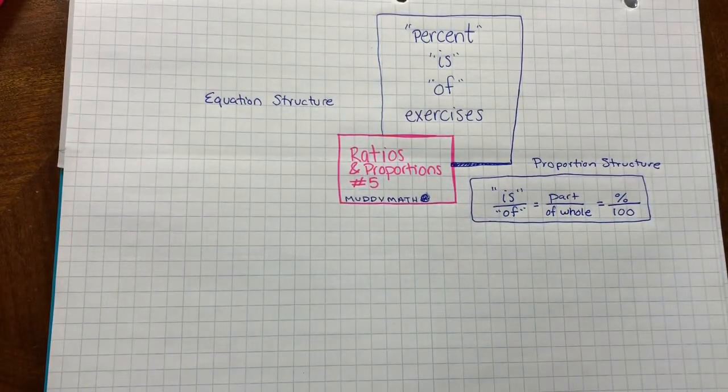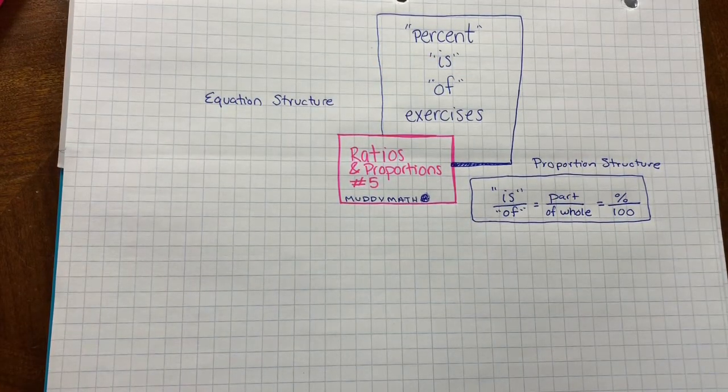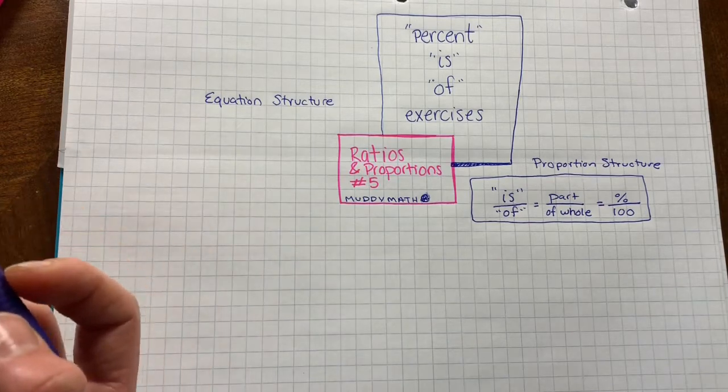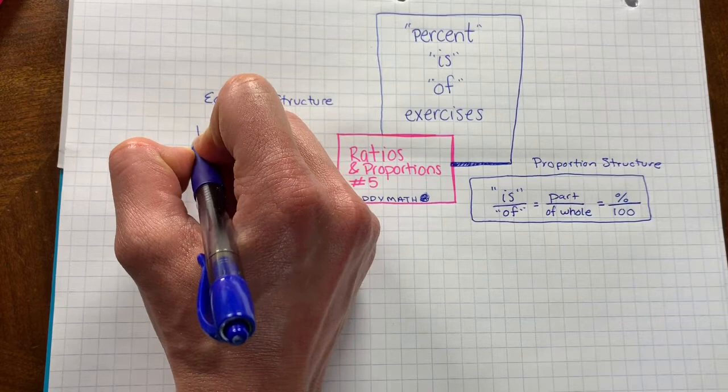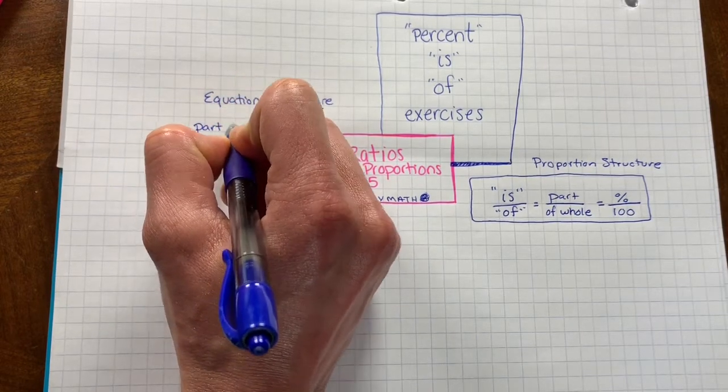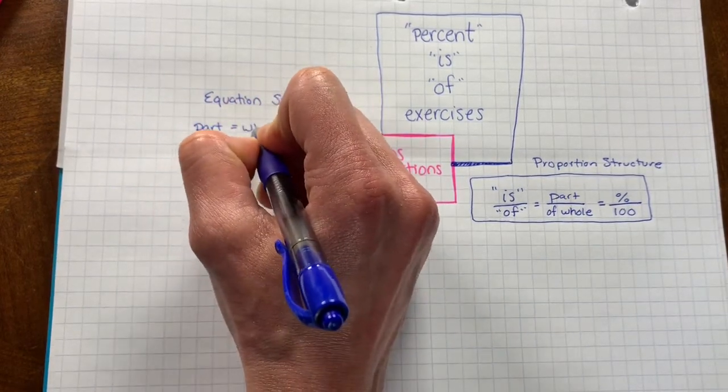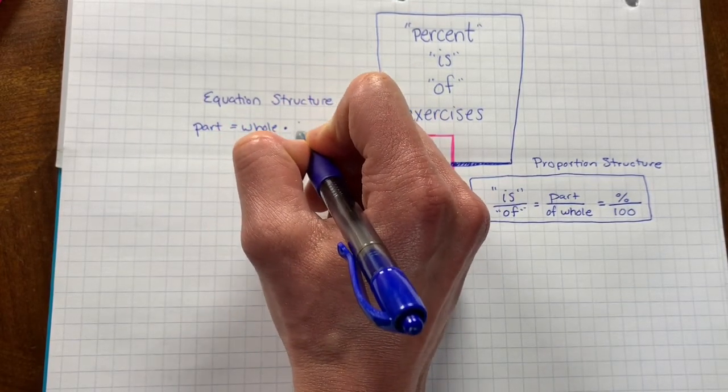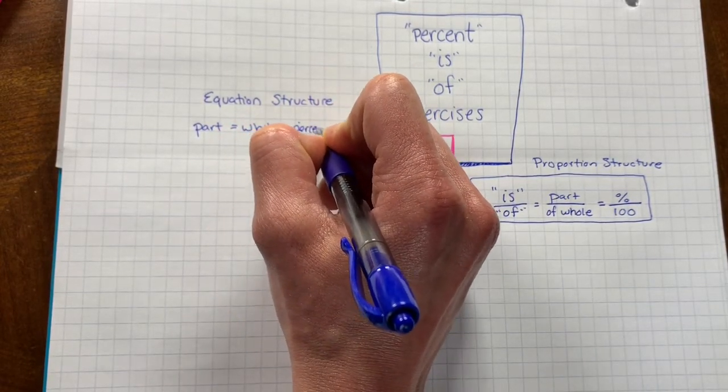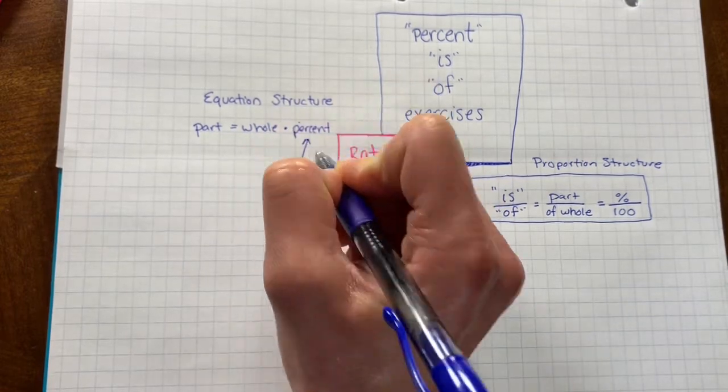And then we're mapping that to the percent of 100 scale. There's another structure of math you can use to solve percent is of exercises, and that's the equation structure. In this case, the part equals the whole times the percent, where the percent is written as a decimal.